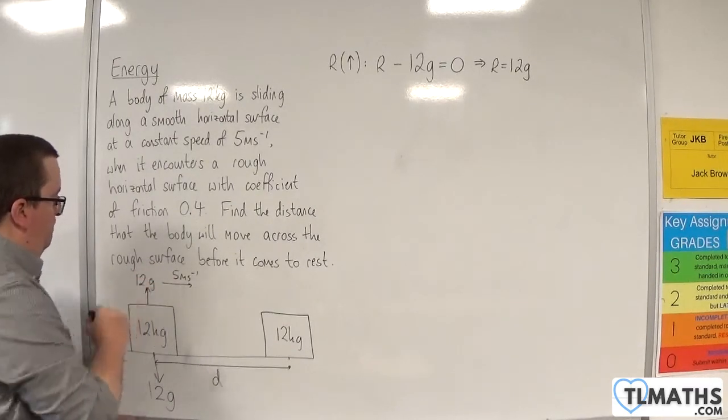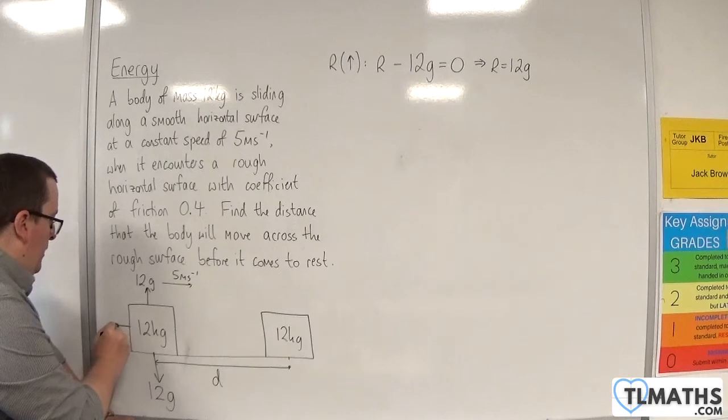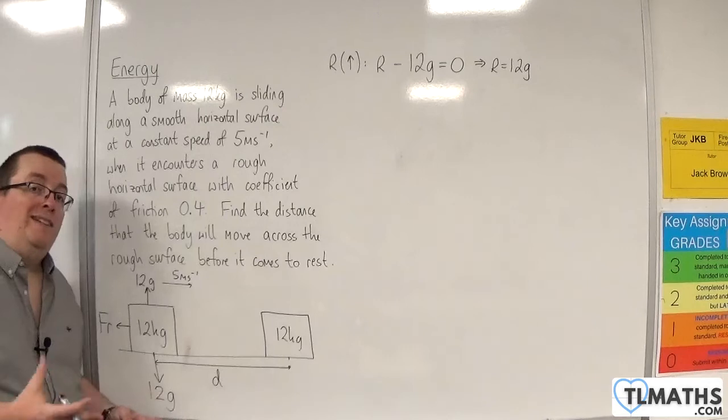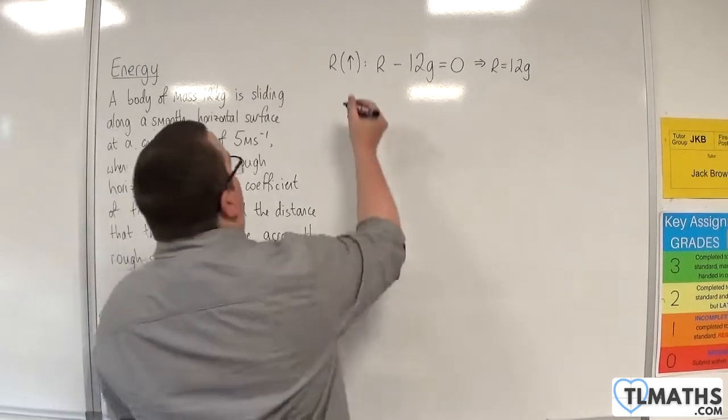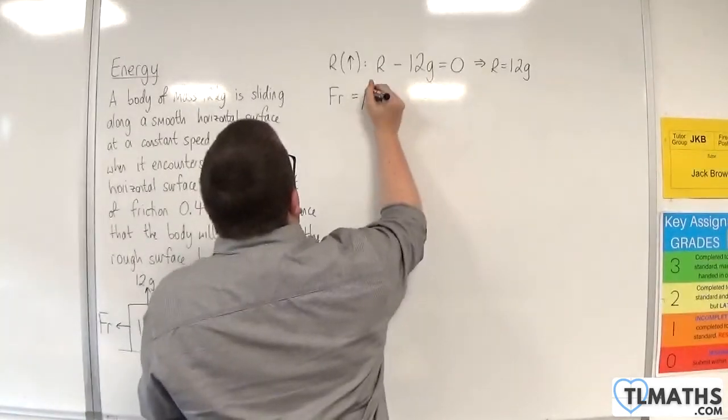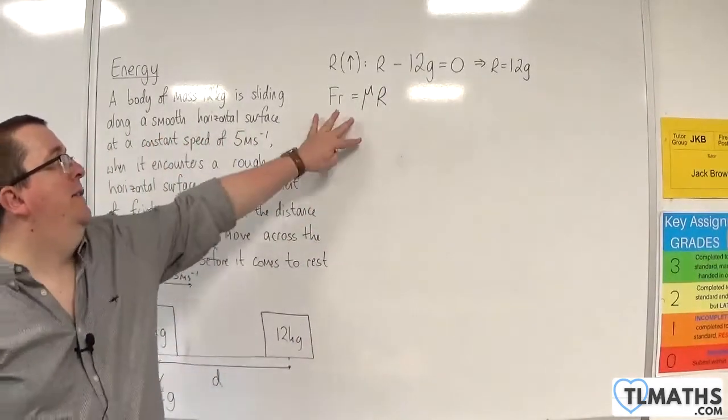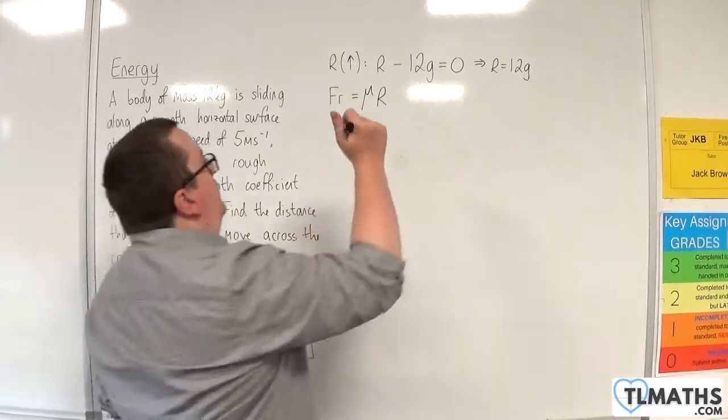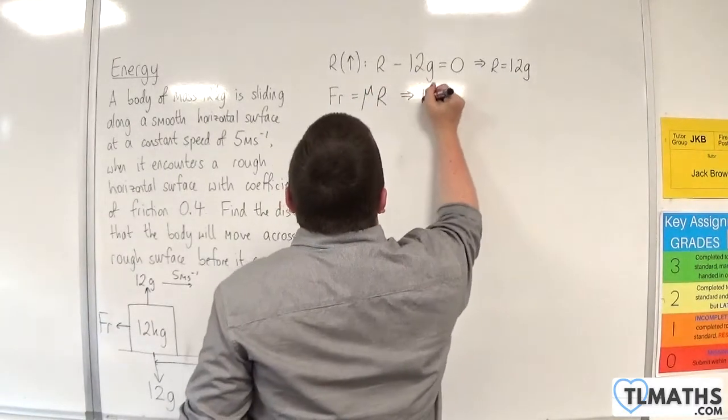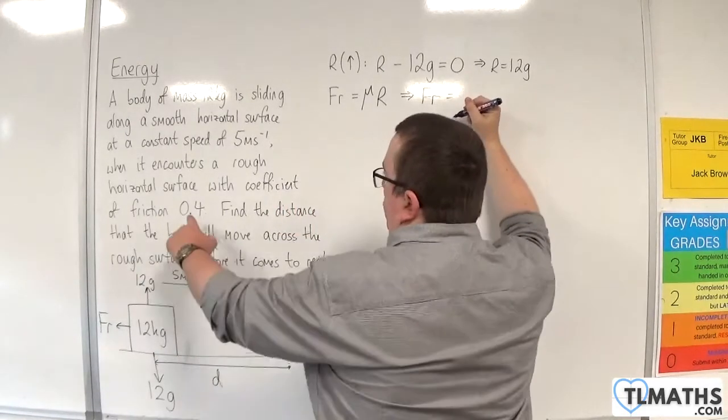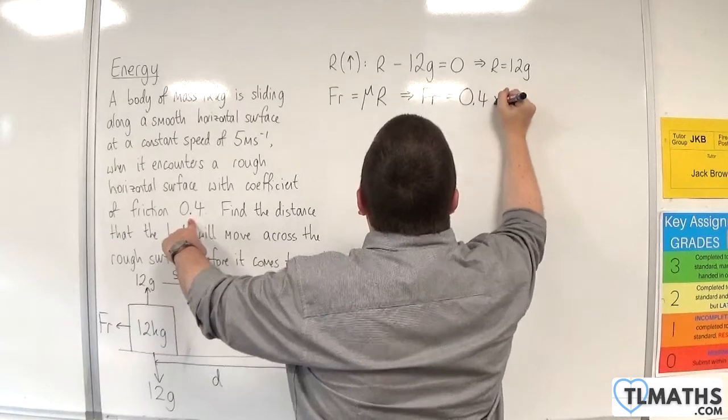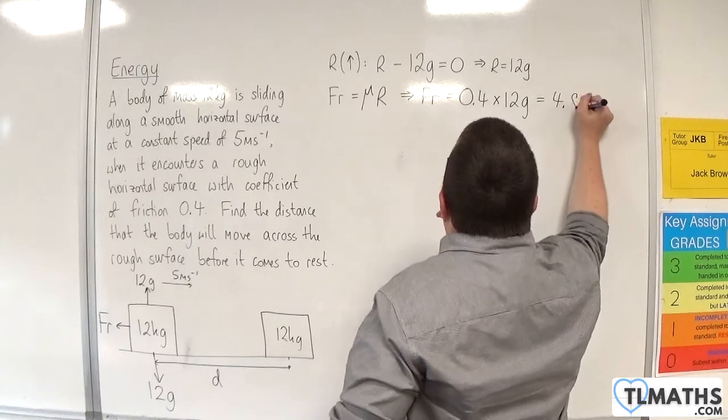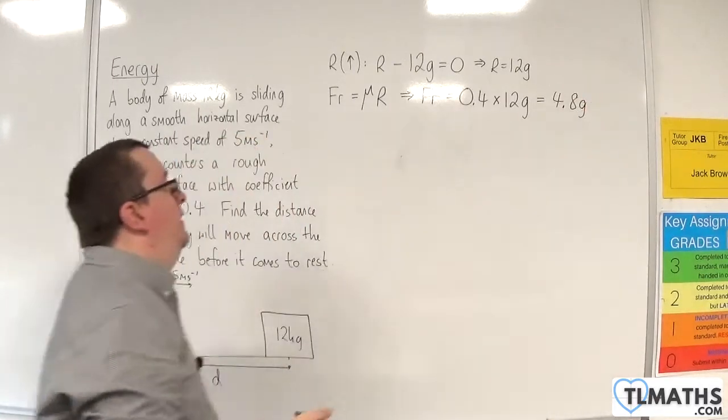Now, because the surface is rough, we will have a frictional force. Because we know that the object is moving, we know that the friction is going to be equal to mu times R, as we learned in A-level maths. That means the friction is going to be equal to 0.4 times 12g, which gives us 4.8g. So that is our frictional force.